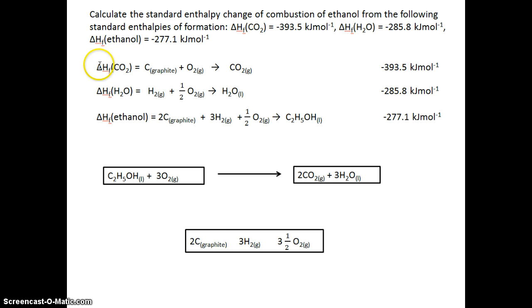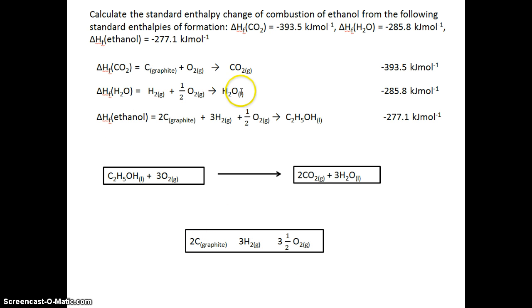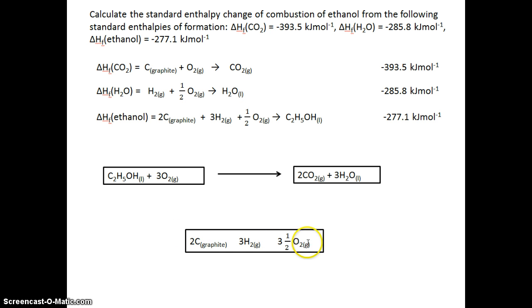Whenever you're doing enthalpy change of combustion from enthalpy change of formation, the third box will contain the elements in their standard states. For example, in the enthalpy change of formation of carbon dioxide, the CO₂ already appears as a product, but the carbon and oxygen don't appear as either a reactant or product, so they go into the 'everything else' box. Similarly with water — water occurs as a product so we don't need to worry about that, but the hydrogen gas and oxygen gas go into this box. The ethanol occurs as a reactant because you're burning it, but the elements used to form it are also placed in this third box.